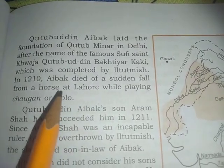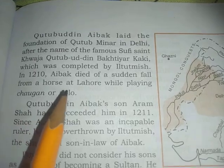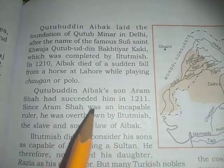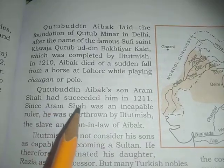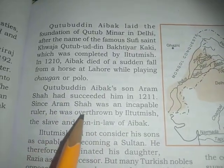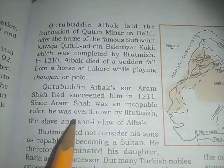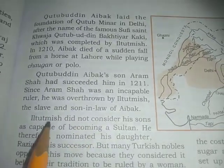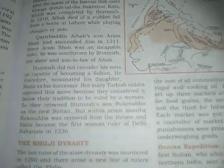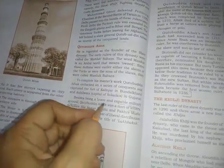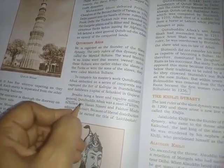Aibak died of a sudden fall from a horse at Lahore while playing chaugan, a form of polo. His son Aram Shah succeeded him in 1211. Since Aram Shah was an incapable ruler, he was overthrown by Iltutmish, the slave and son-in-law of Aibak.